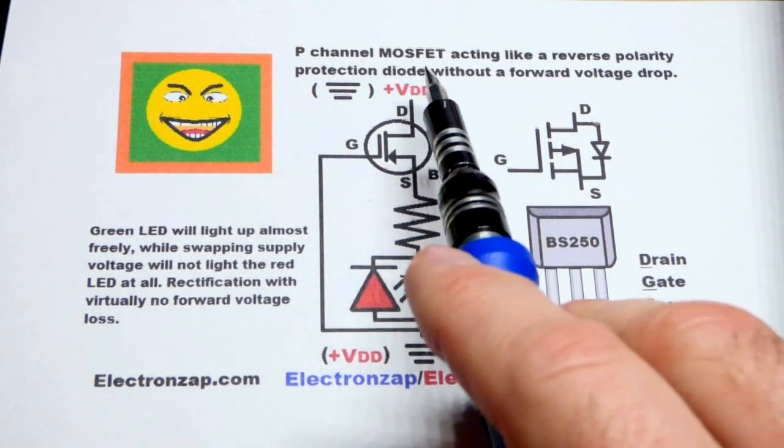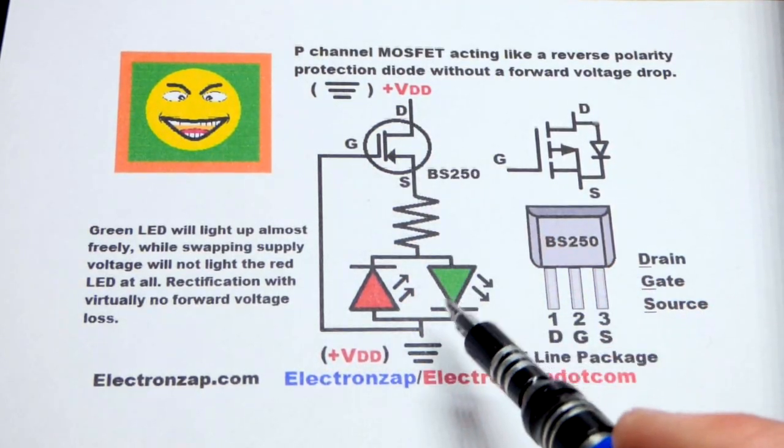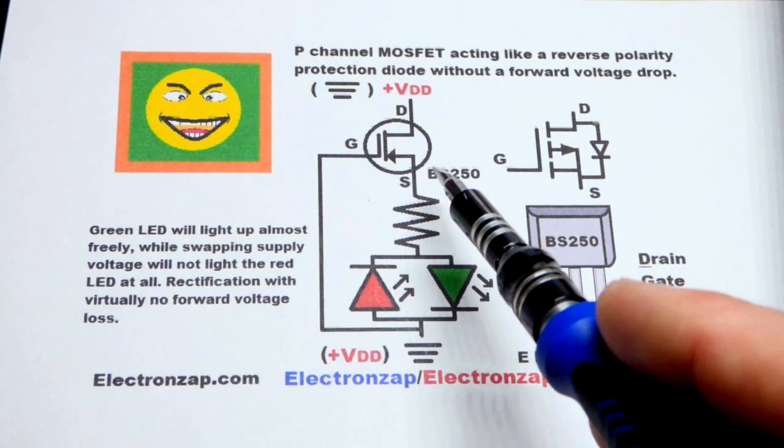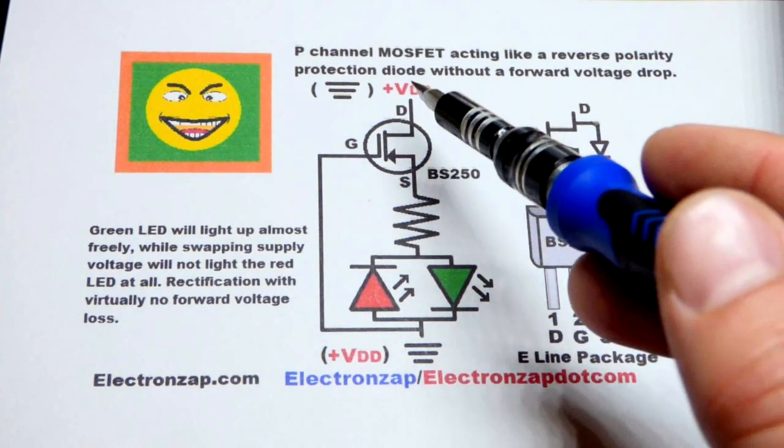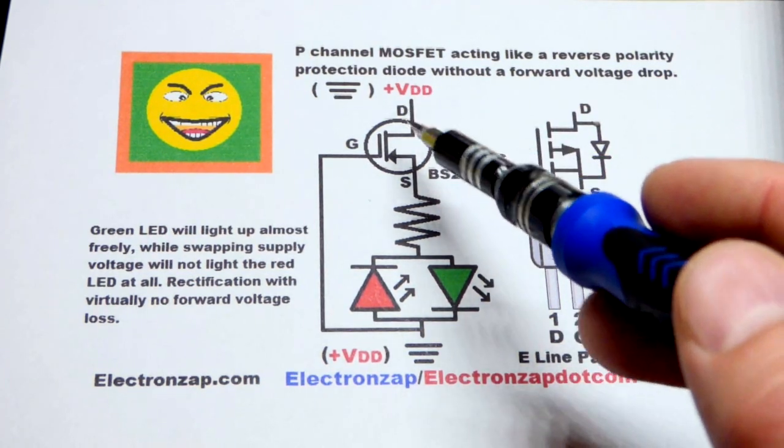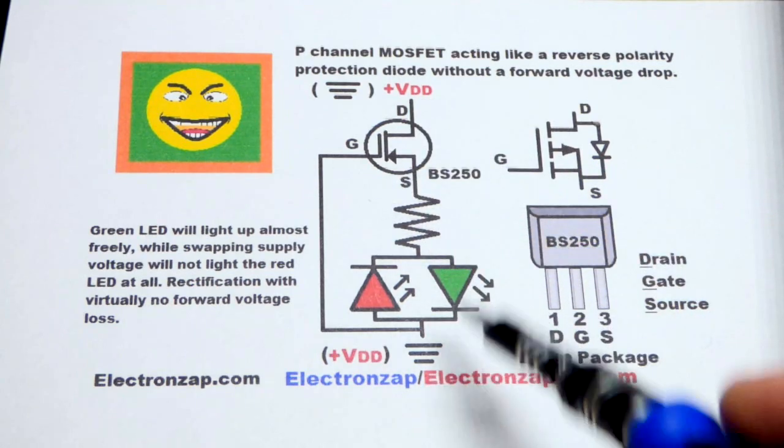In this video we're going to look at using the P-channel MOSFET basically as a diode. It has an improved property of a diode where when it's conducting, it's conducting practically freely.